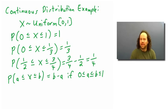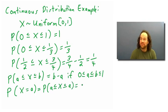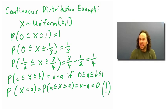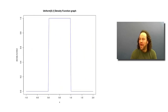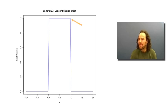This has an interesting consequence: the probability that x equals any particular number a is 0, since it equals the probability x is between a and a, which is a - a = 0. With probability 1, x will be somewhere between 0 and 1, yet the probability is 0 that x equals any particular value. It's best to think about a continuous distribution in terms of the area underneath a graph of a function called the density function. For the uniform(0,1) distribution, the density function equals 1 between 0 and 1 and 0 everywhere else.